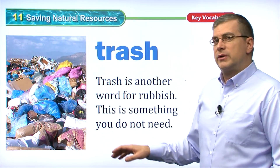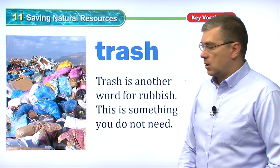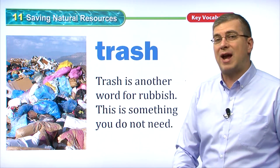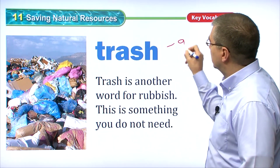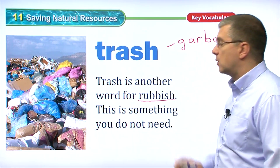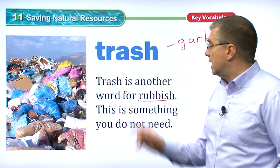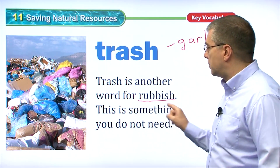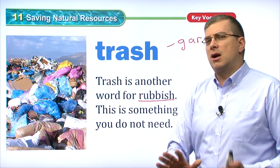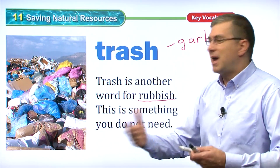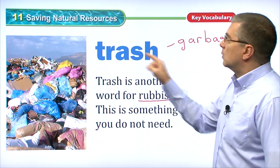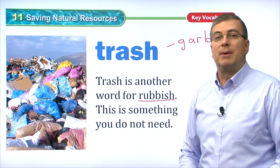Earlier we saw a lot of garbage and pollution on the beach. This is what we call trash — things that people throw away because they don't need them. There are many words that mean the same as trash: garbage and rubbish are two common ones. Trash is something you do not need. Our natural tendency is to throw it away, but maybe we could reuse it. We want to reduce the amount of trash we make — big piles of trash cause land pollution.